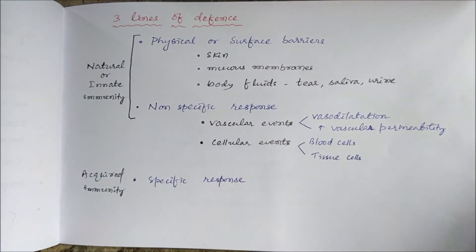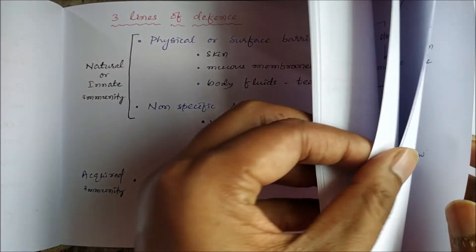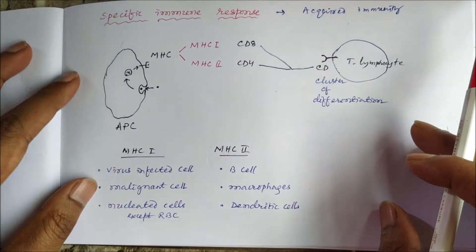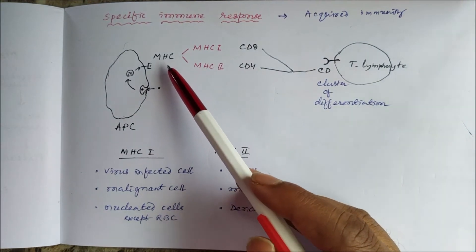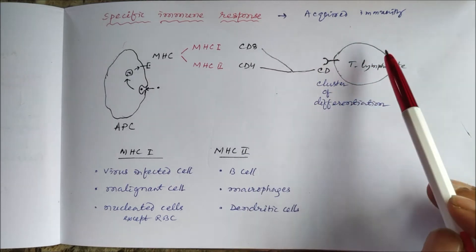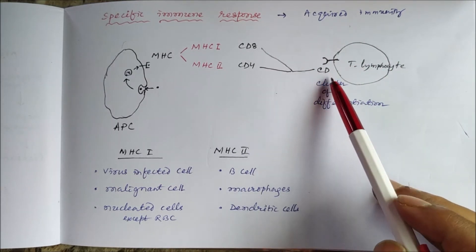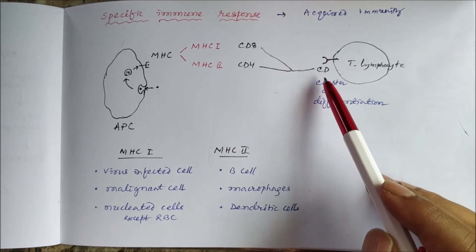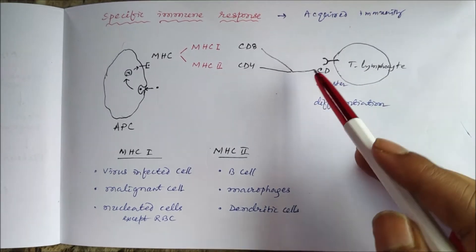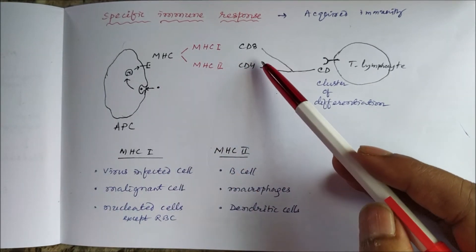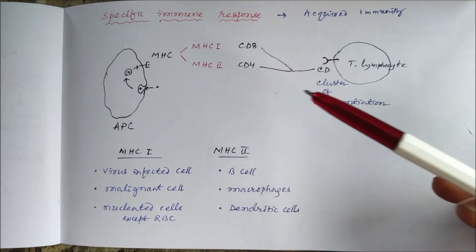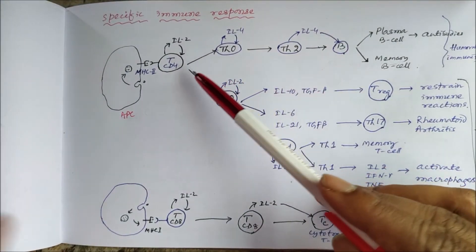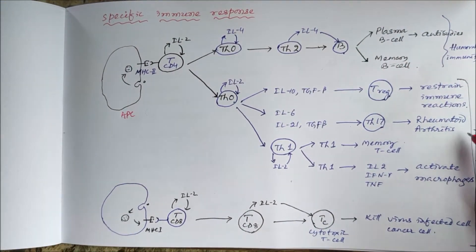The specific response involves T lymphocytes. First, the antigen is expressed in the form of major histocompatibility complex (MHC) and is recognized by T lymphocytes, which have cluster of differentiation (CD) markers on their surface. There is interaction between MHC and CD: MHC class I interacts with CD8, and MHC class II interacts with CD4. When there is MHC2–CD4 interaction, there will be either humoral immunity or cellular immunity.